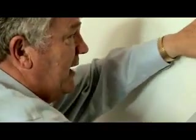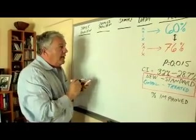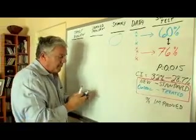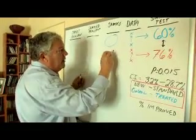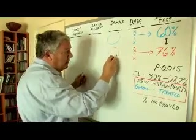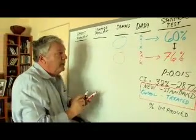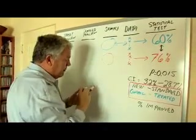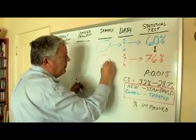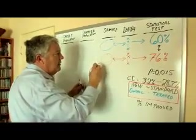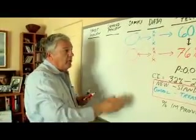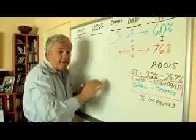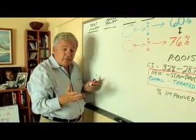So where did this data come from? We had to start with a sample — a sample of patients from the new treatment and a sample from the standard treatment. And the issue is the data must be representative of the samples. How could the data not be representative of the samples? Well, the data could not be representative if we didn't measure everybody. Maybe patients dropped out of the study.